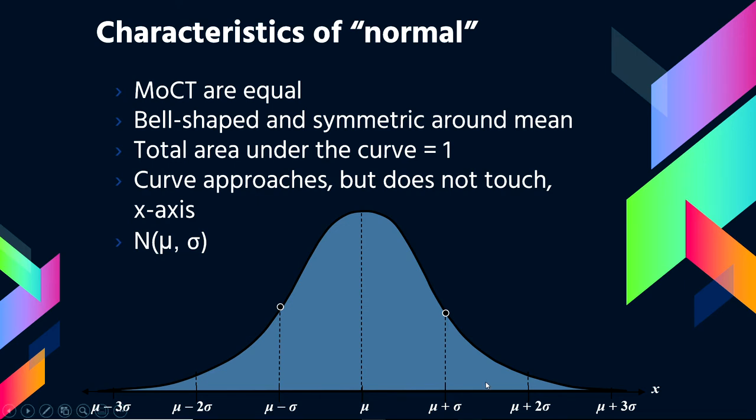You see here the indication of μ, the mean, right in the middle of the distribution. But in a normal distribution, where the mean is located is also the median and the mode. It's the highest peak in the distribution, which makes it the mode, and it splits the distribution in perfect half, which makes it the median. In a normal distribution, all measures of central tendency are equal.